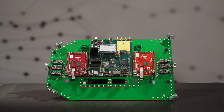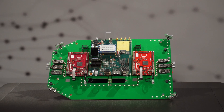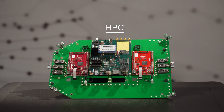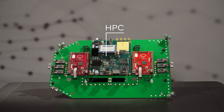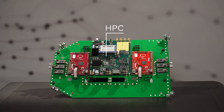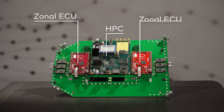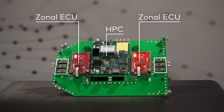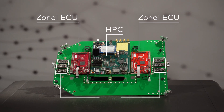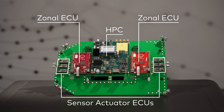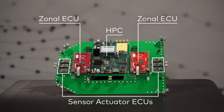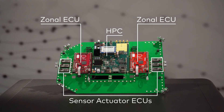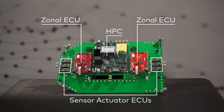We can see the different kinds of ECUs — from large HPCs for ADAS, IVI and generic vehicle control, to zonal controllers which will simplify the wiring harness, to small sensor and actuator ECUs. Of course, there are more ECUs like control ECUs in such an architecture.